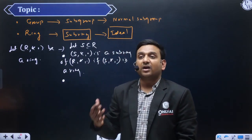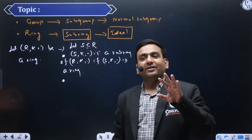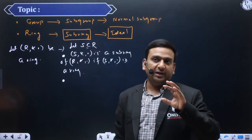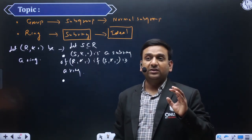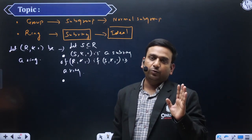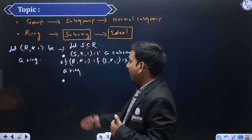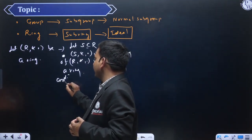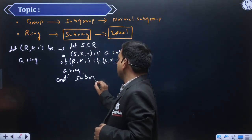Ab there is a condition — baar baar poori itni saari properties jo ring ki hain, teen part mein likhte hain: pehla with respect to first composition abelian dikhate hain (paanch properties), second composition semi-group dikhate hain, phir third mein second composition ko first ke upar distributivity. So I can go by the definition or I have an instrument to check the subring — that is the subring test.